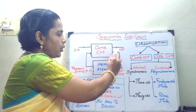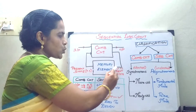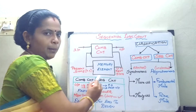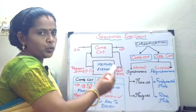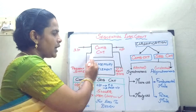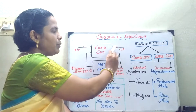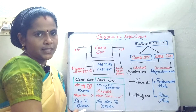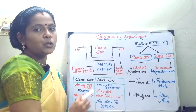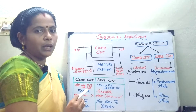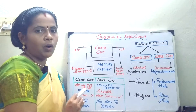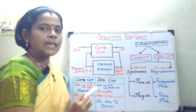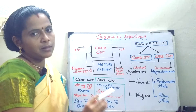Once you get the output depending upon the data, it is going to be fed back. For the memory element, you will have two states — one is the present state, and after the output comes, you have the next state. So when a memory element is included in the combinational circuit, it is called a sequential circuit.